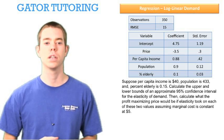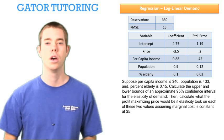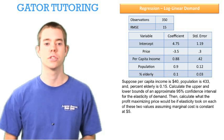Then, calculate what the profit maximizing price would be if the elasticity took on each of these two values, assuming that the marginal cost is constant at $5.